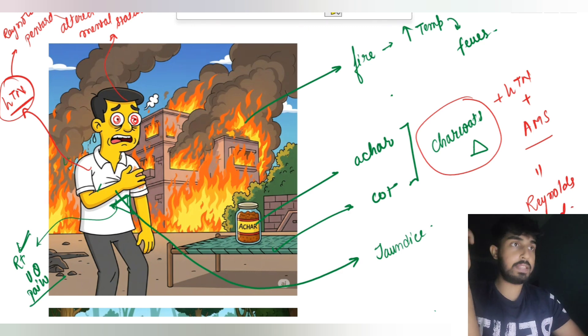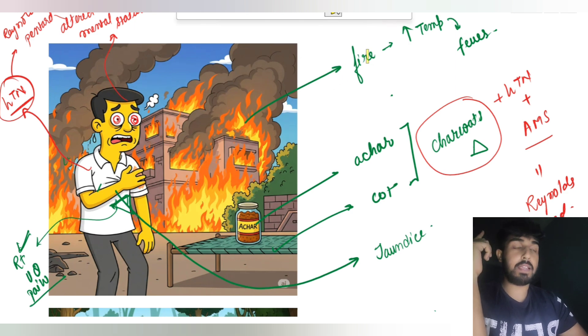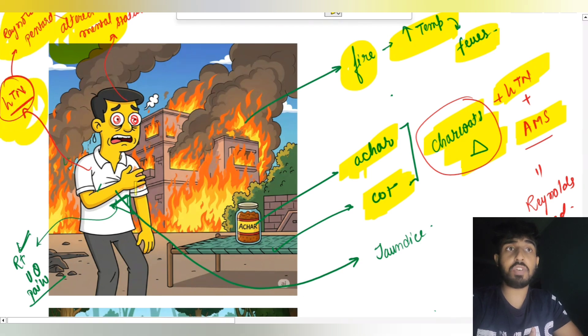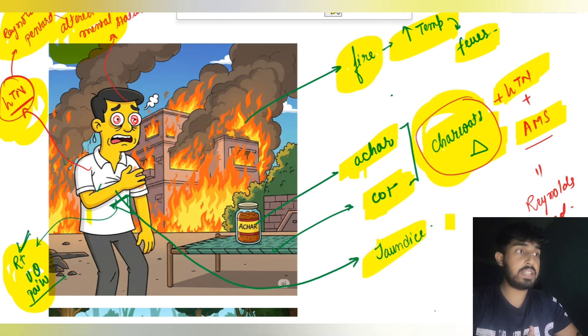Right? So that's all. That's all for this video. Let's have a quick recap, right? Fire, increase in the temperature, that is fever. Achar plus cot, that is Charcot's triad. Hypotension plus altered mental sensation is resulting in the formation of Reynolds pentad. Right upper quadrant pain plus jaundice plus fever, that is basically Charcot's triad, right? And hypotension and altered mental sensation is Reynolds pentad.